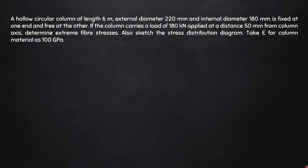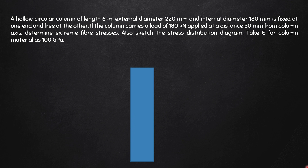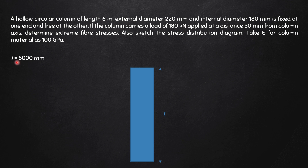Now let us break it down step by step. First, I will show the elevation of the column and then write the given data. The length is given as 6 meters, but I am going to convert everything into mm and all forces into Newtons. So L equals 6000 mm. I also need to show the internal and external diameters, so I'll draw the plan of the column — I have enlarged the view a bit so you can see it clearly.